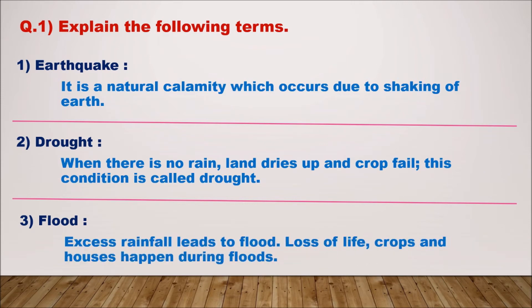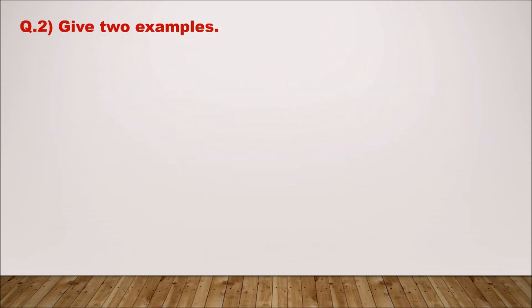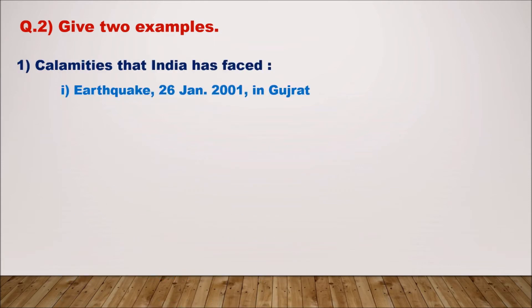Three — flood: excess rainfall leads to flood; loss of life, crops, and houses happen during floods. Question two: give two examples of calamities that India has faced. One — earthquake: 26th January 2001 in Gujarat. Two — flood: 8th August 2019 in Kerala.